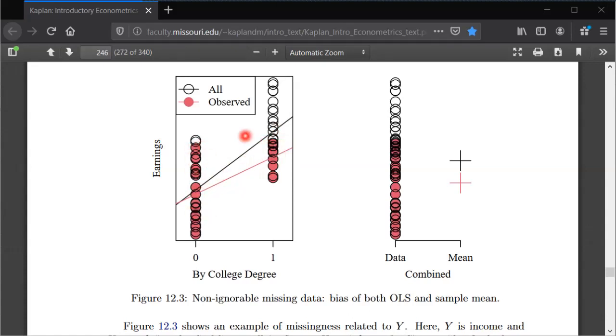And we can sort of see that just visually from the picture, right? If you try to draw a red line that's the best fit between just the red dots, we'll get this flatter line here, whereas if we also include the missing values, we'd have a much steeper slope.